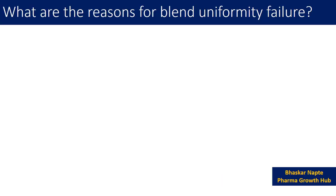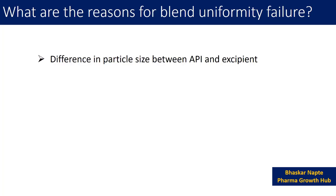The number one reason for blend uniformity failure is the difference in particle size between the API and the excipient. Assume that you are using a dry mixing compression process or direct compression process. If the particle size of the API and the excipient is not the same, segregation can happen very easily, and because of that you may end up with a non-homogeneous blend.